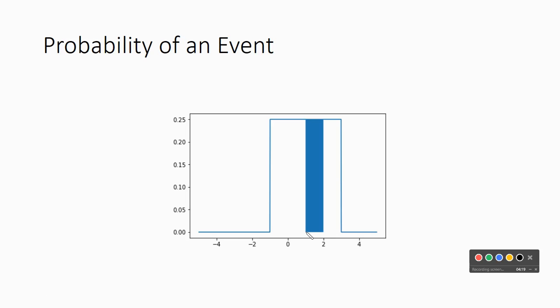So here we have the endpoints are going to be at one and two for this particular graph. The height of this particular graph is 0.25. So 0.25 for the height times the width, which is one. So this will be the probability of an outcome being inside here is equal to one.